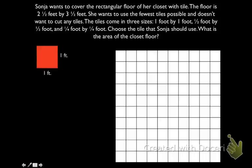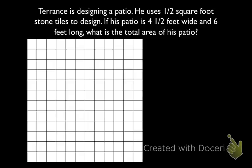Now it's your turn. Let's look at this problem. Terrence is designing a patio. He uses one-half square foot stone tiles to design. If his patio is four and a half feet wide and six feet long, what is the total area of his patio? Feel free to pause the video and solve this for yourself. Start it again when you're ready to check your answer.